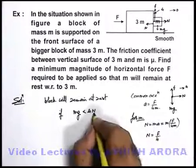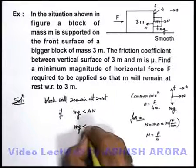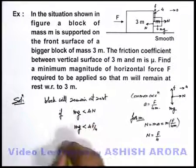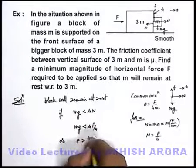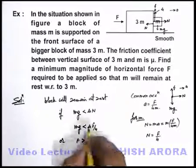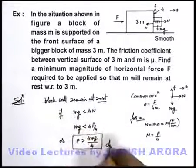If we just put this value of normal reaction over here, you can see mg is less than μ into F by 4. Or we can say F should be more than 4mg upon μ for the block to remain at rest. So this will be the answer to our question.